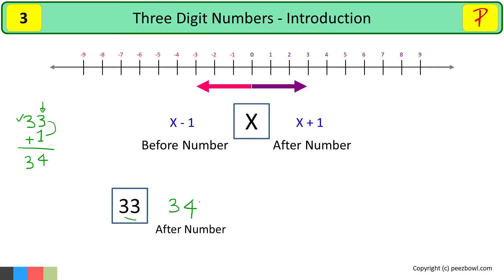And to get number before 33 we need to subtract 1 from 33. Let us write 33 here again. And below it I will write 1. A minus sign will indicate that we are subtracting these two numbers. At the ones place 3 minus 1 is 2. And at the tens place we have 3. So the number before 33 is 32.